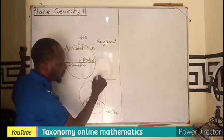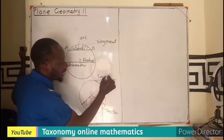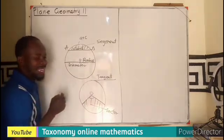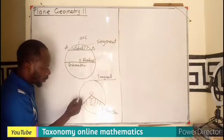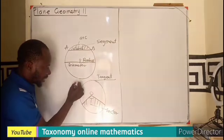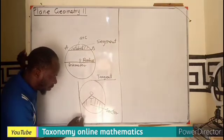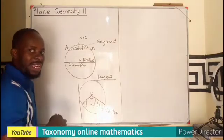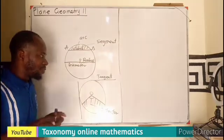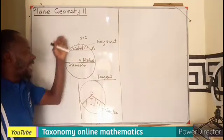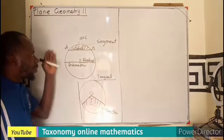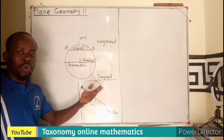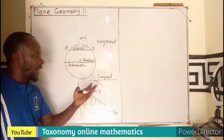If you have any line that touches the circle at any point, we call that a tangent. A tangent is just touching the circle at one point. Any line that touches or connects at any point on a circle is called a tangent. These are some of the parts of a circle which we will be using in our circle theorems for Plane Geometry 2.